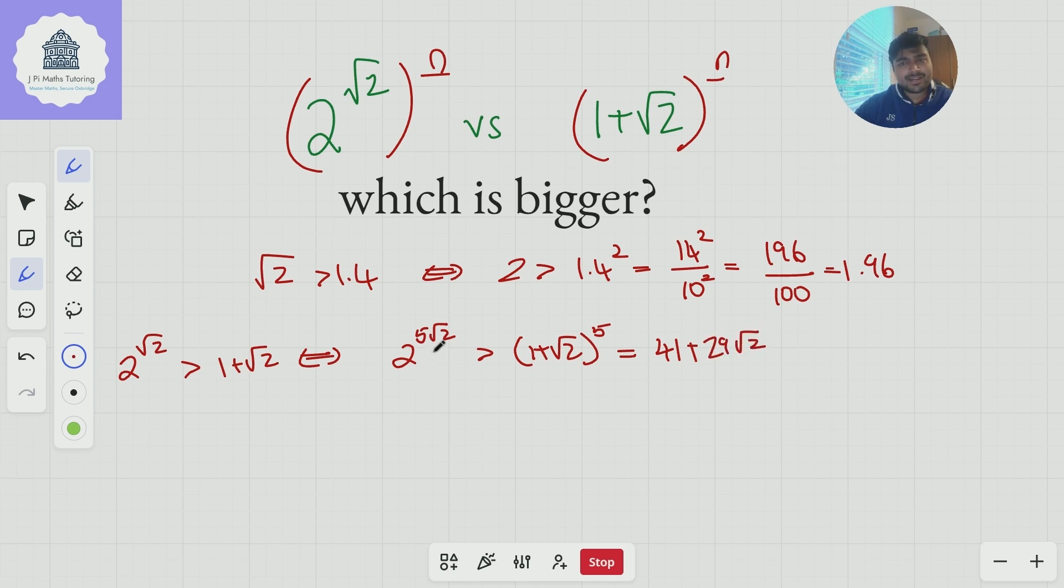And the question is, is 2 to the power of 5 root 2 bigger than 41 plus 29 root 2? And well, the answer is yes. Yes, it is.